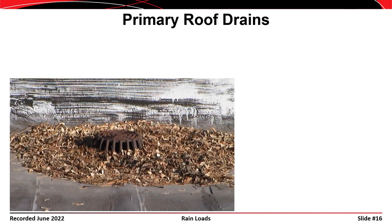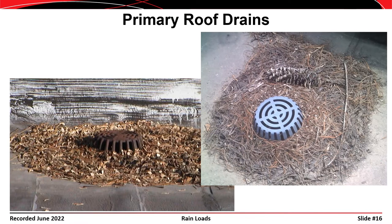This is what we're guarding against by having primary and secondary drain systems. If the primary drain system becomes clogged, that leads to an accumulation of water. Without a secondary system to account for this, the weight of the water could quickly become large enough to cause a collapse of the roof structure.